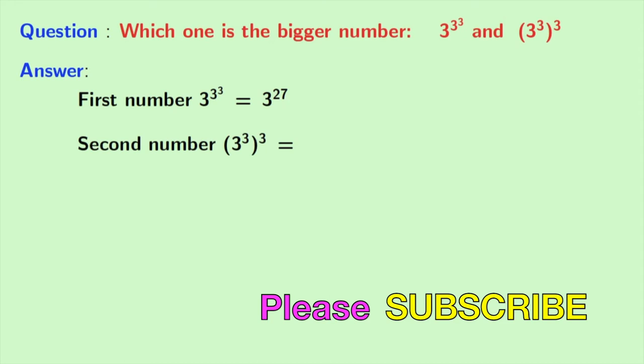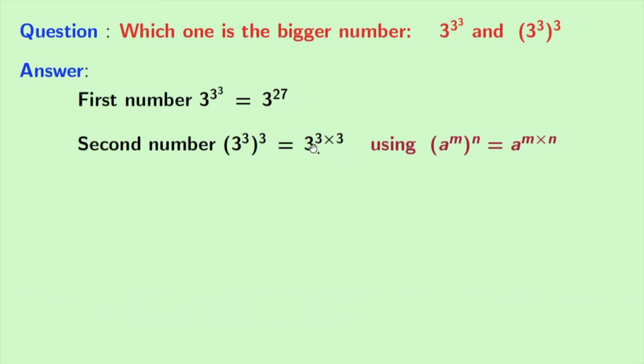Now, we will consider the second number, that is (3^3)^3 and we can rewrite it as 3^(3×3). Using the rule of (a^m)^n = a^(m×n). Where a is 3, m is 3 and n is again 3.